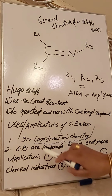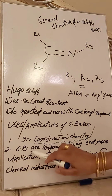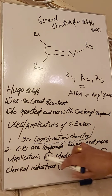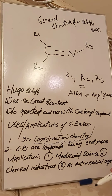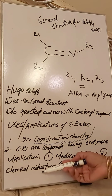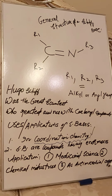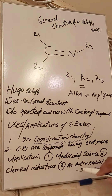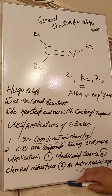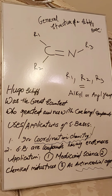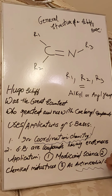Schiff bases have enormous applications. Number one: they are used in medicinal science and medical fields. Number two: they are used in chemical industries in a number of ways. Number three: they act as antimicrobial agents — they have the property of being effective antimicrobial agents and have also been used in several natural food samples.